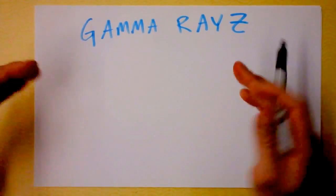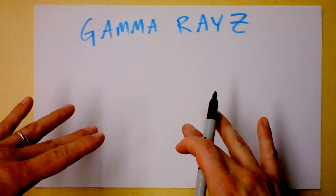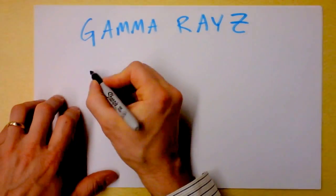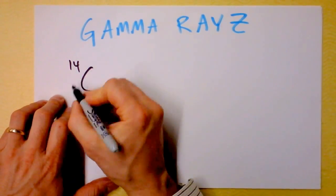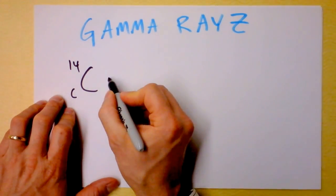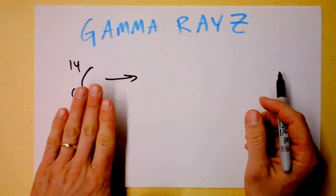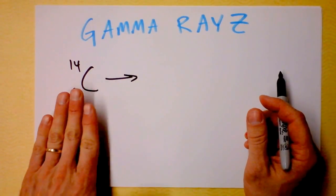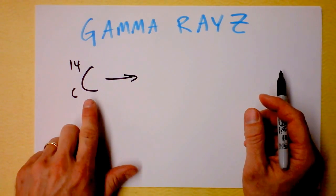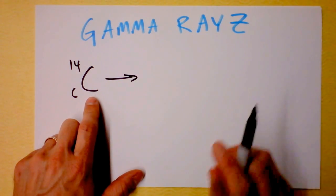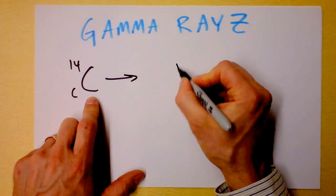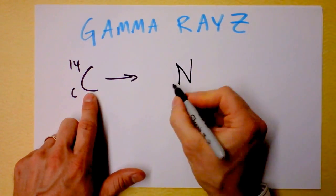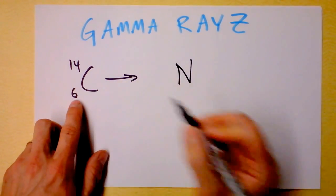Before we go to gamma radiation though, I need to be a little bit more honest with you about beta radiation. When carbon-14, which is an unstable carbon produced in the upper atmosphere, and we'll talk more about carbon-14 because it's very useful for practical purposes, when carbon-14 undergoes beta minus decay, it goes to nitrogen because we're going to get one extra - this is supposed to be 6 now.